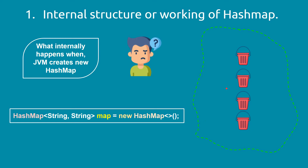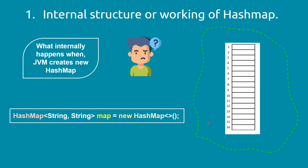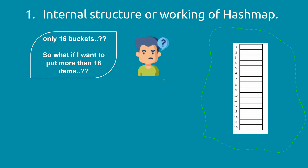These are not literally buckets, but the analogy with a water bucket is the same — in water buckets we store water, similarly this is a data bucket where we store data. JVM has created 16 buckets in heap memory for storing items. Some of you might wonder: what if we want to put more than 16 items in the HashMap? The answer is yes, we can store more than 16 items.